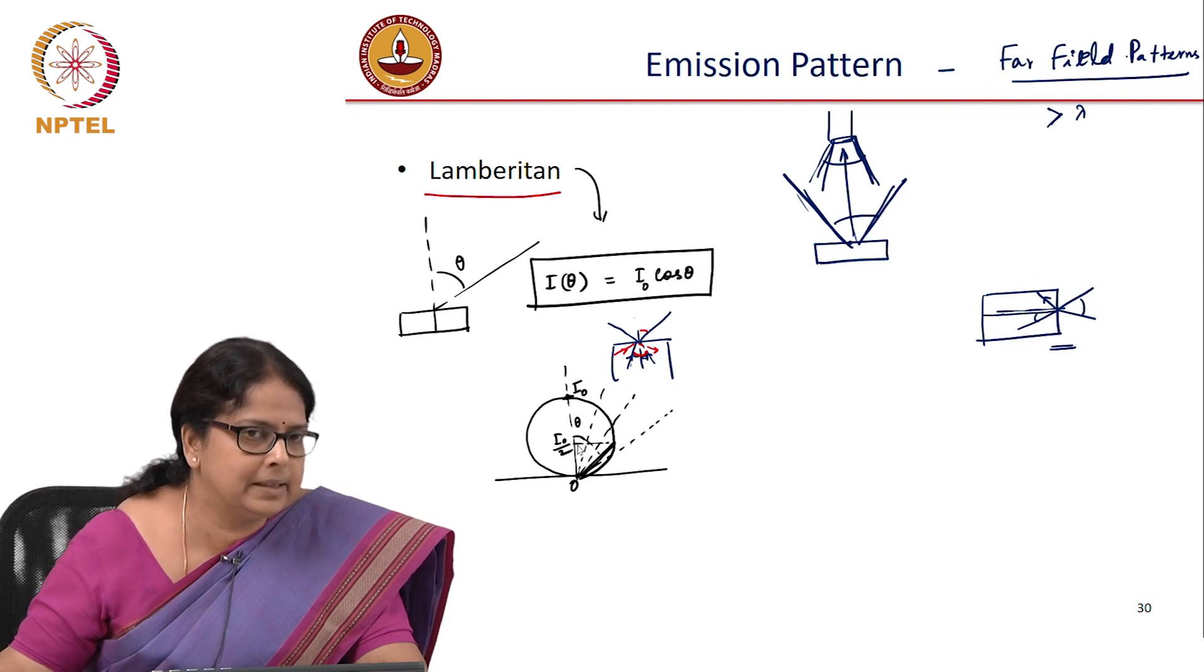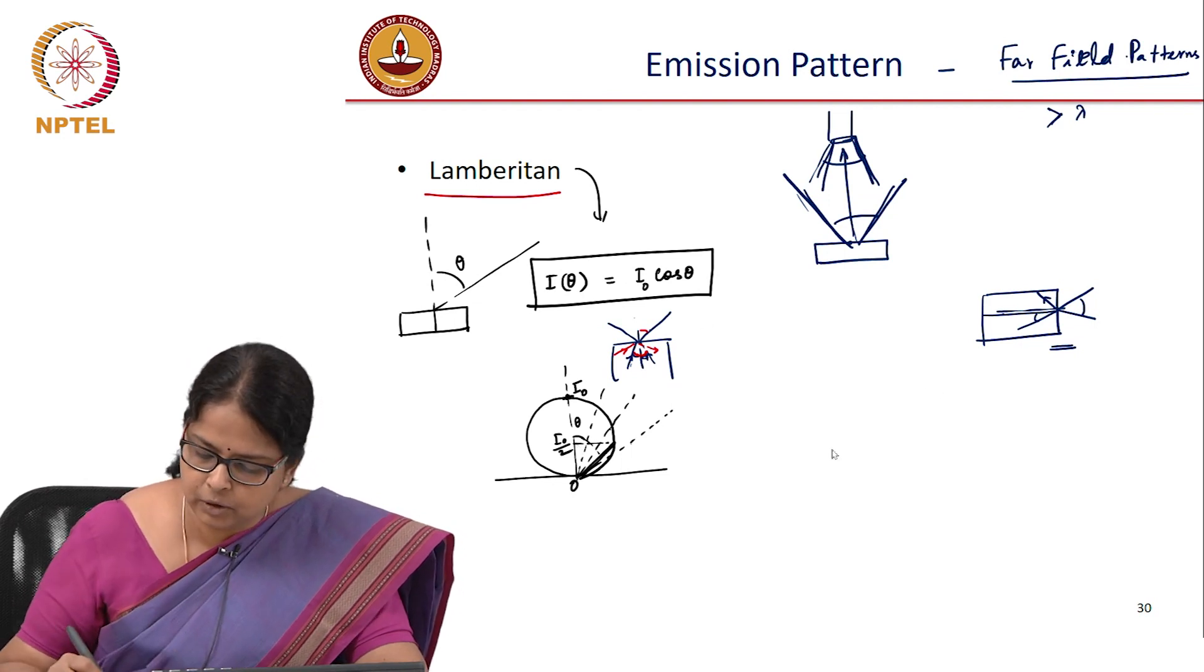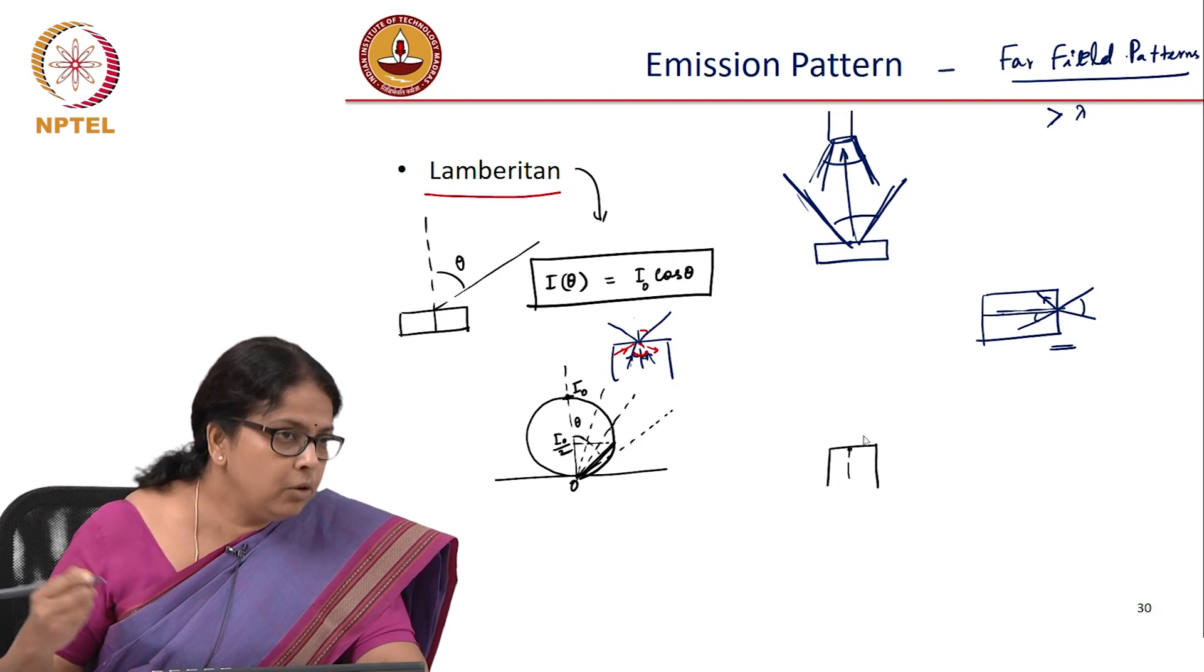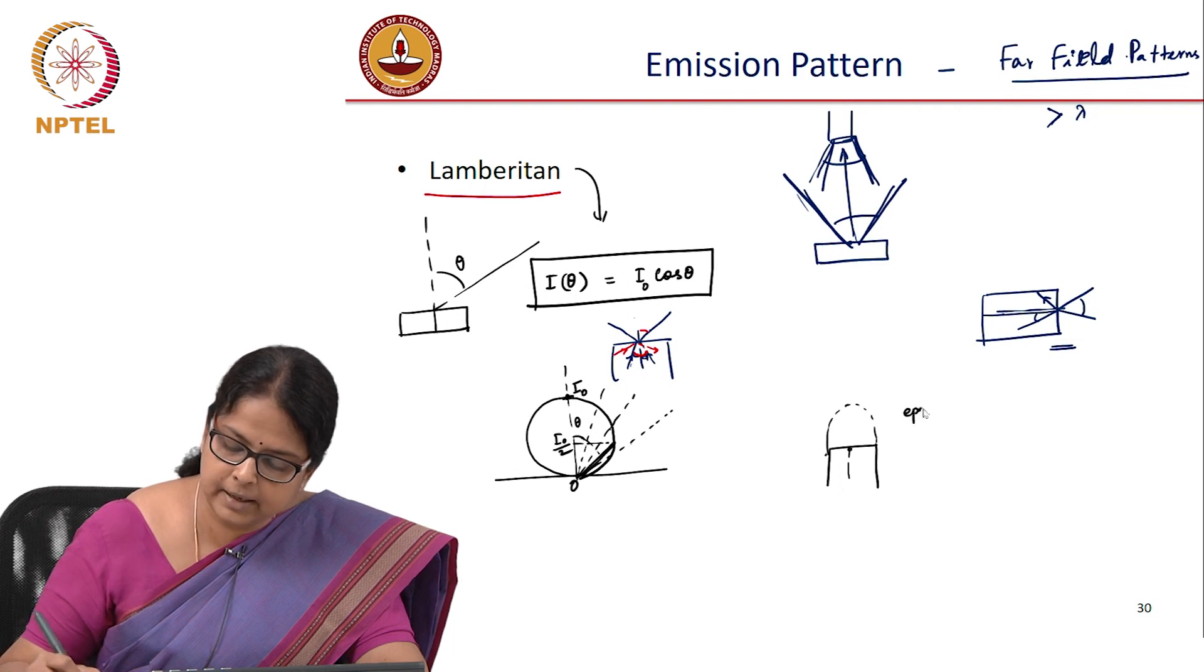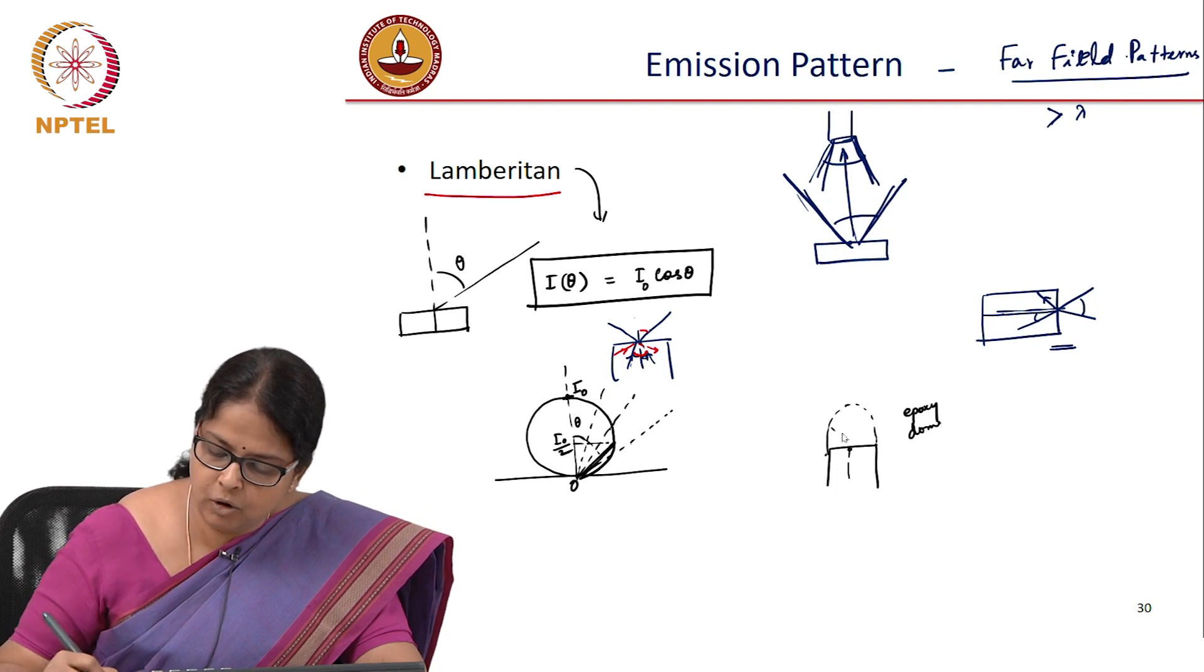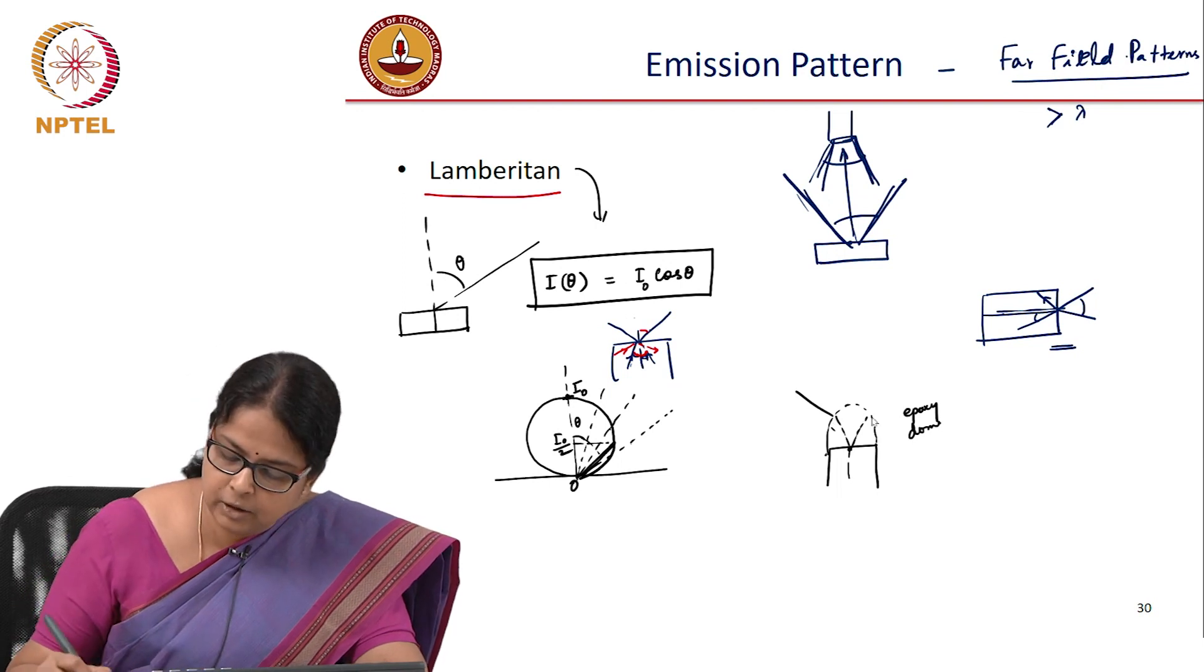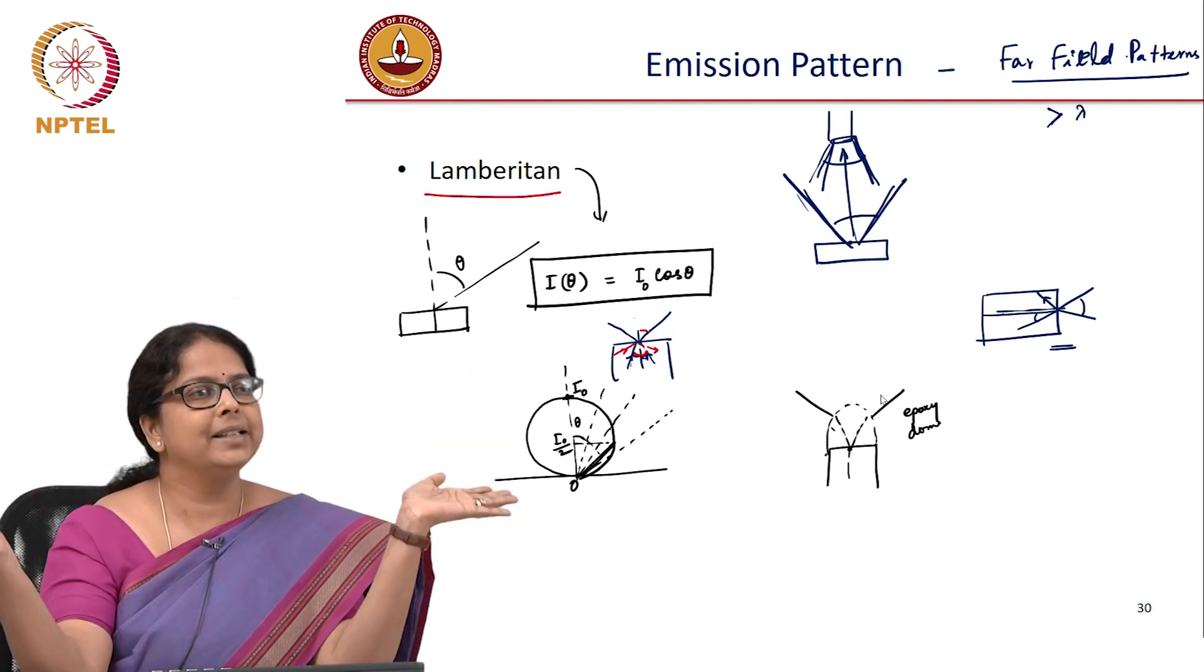So, there is something else also happens before you make a commercial LED. You have the junction emitting. If this is your junction and let us say you have emission, the emission from the junction is of course limited by total internal reflection. But what you also do is that you put a dome which is like an epoxy dome so that even within the dome, it is restricted to a certain angle. What comes outside the dome is further refracted so that the angular spread is increased.